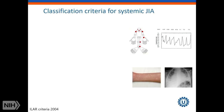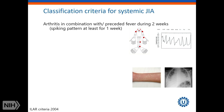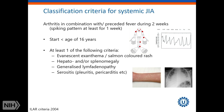As you all know, the classification criteria for systemic JIA are still clinical, and this is still a diagnosis of exclusion per ILAR criteria, which is a bit hampering the diagnostic process, but also makes this a quite heterogeneous disease.